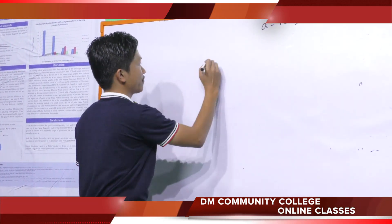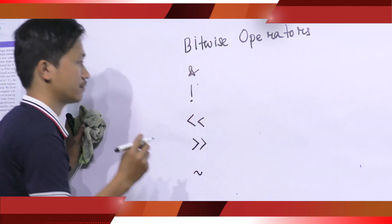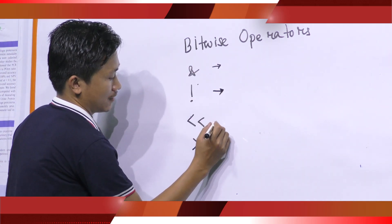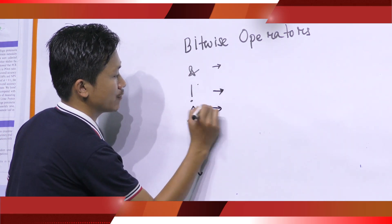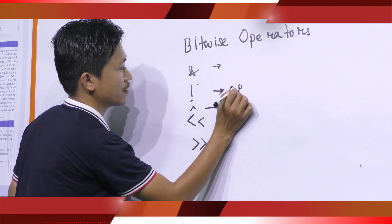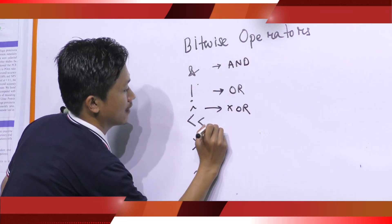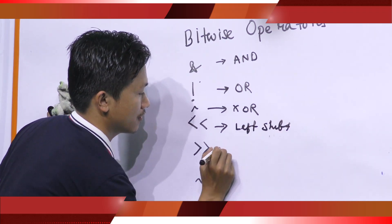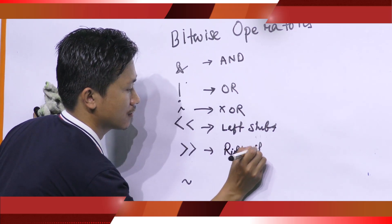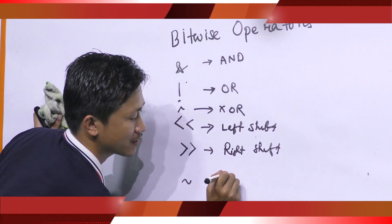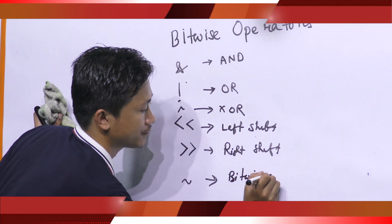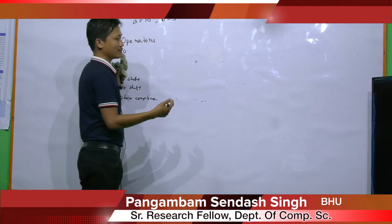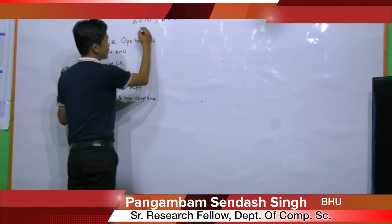Next is bitwise operators. Here we have five operators: first is bitwise AND, second is bitwise OR, third is bitwise XOR. Bitwise means operations are performed in binary format.